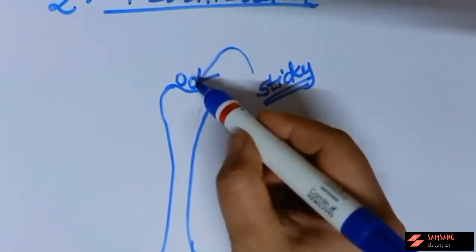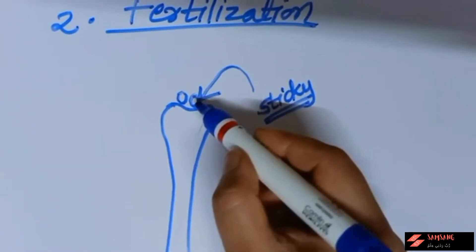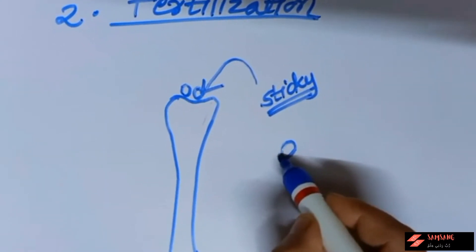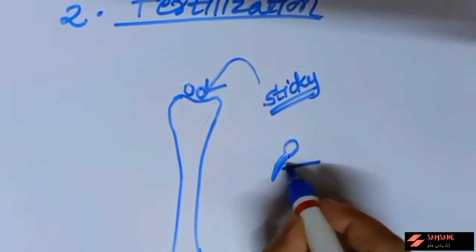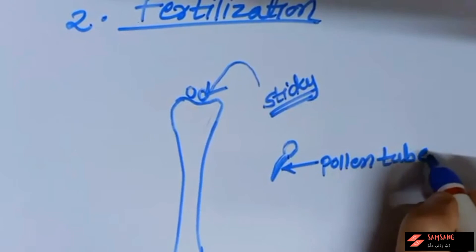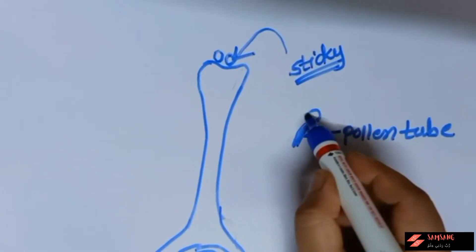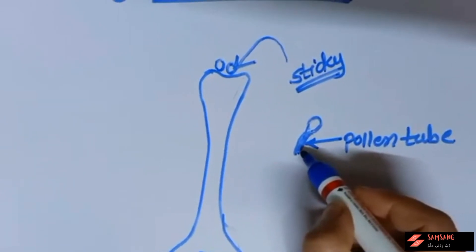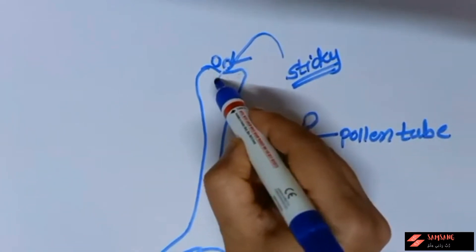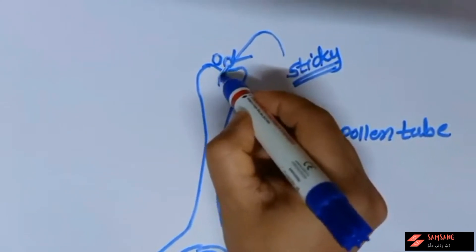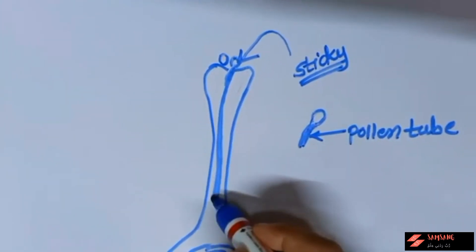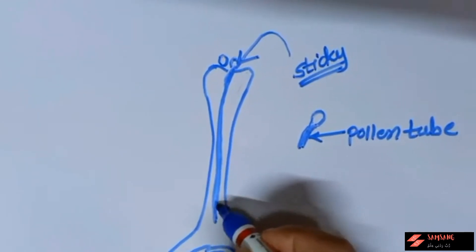After germination of the pollen grain, it bears a tubular structure called a pollen tube. This pollen tube travels from the pollen grain through the style. The style is a hollow part and that is why the pollen tube can travel through it. This pollen tube carries two male gametes along with it.